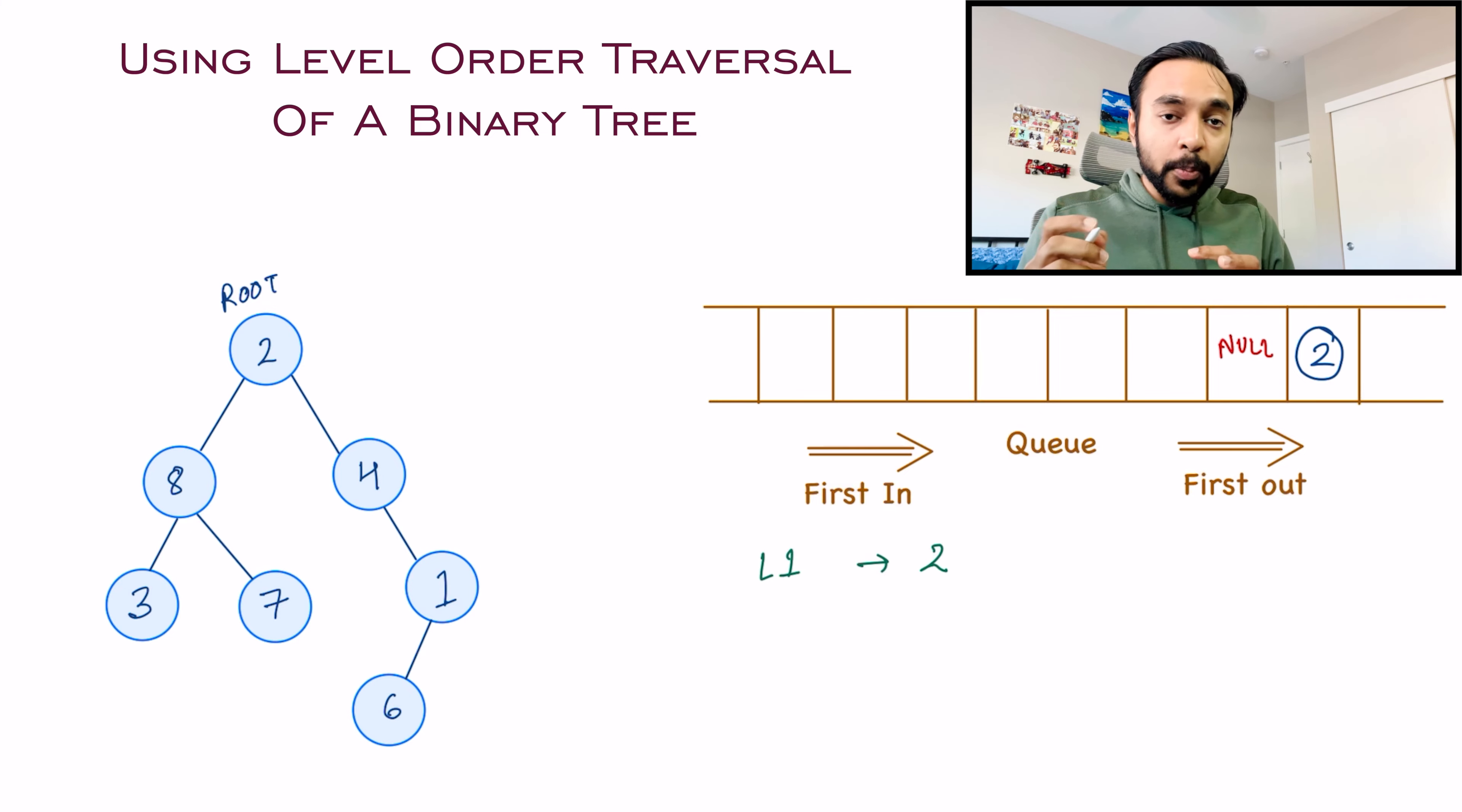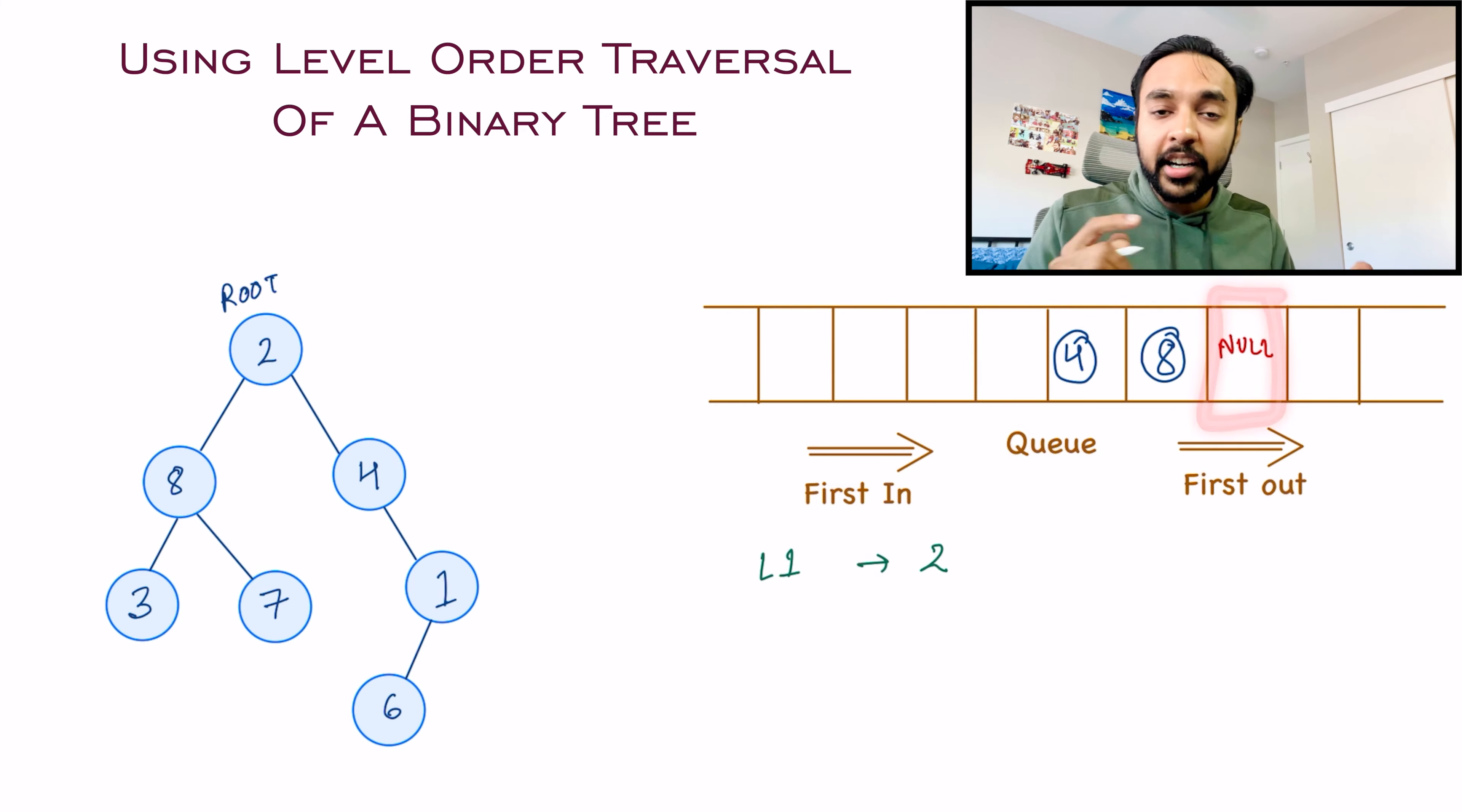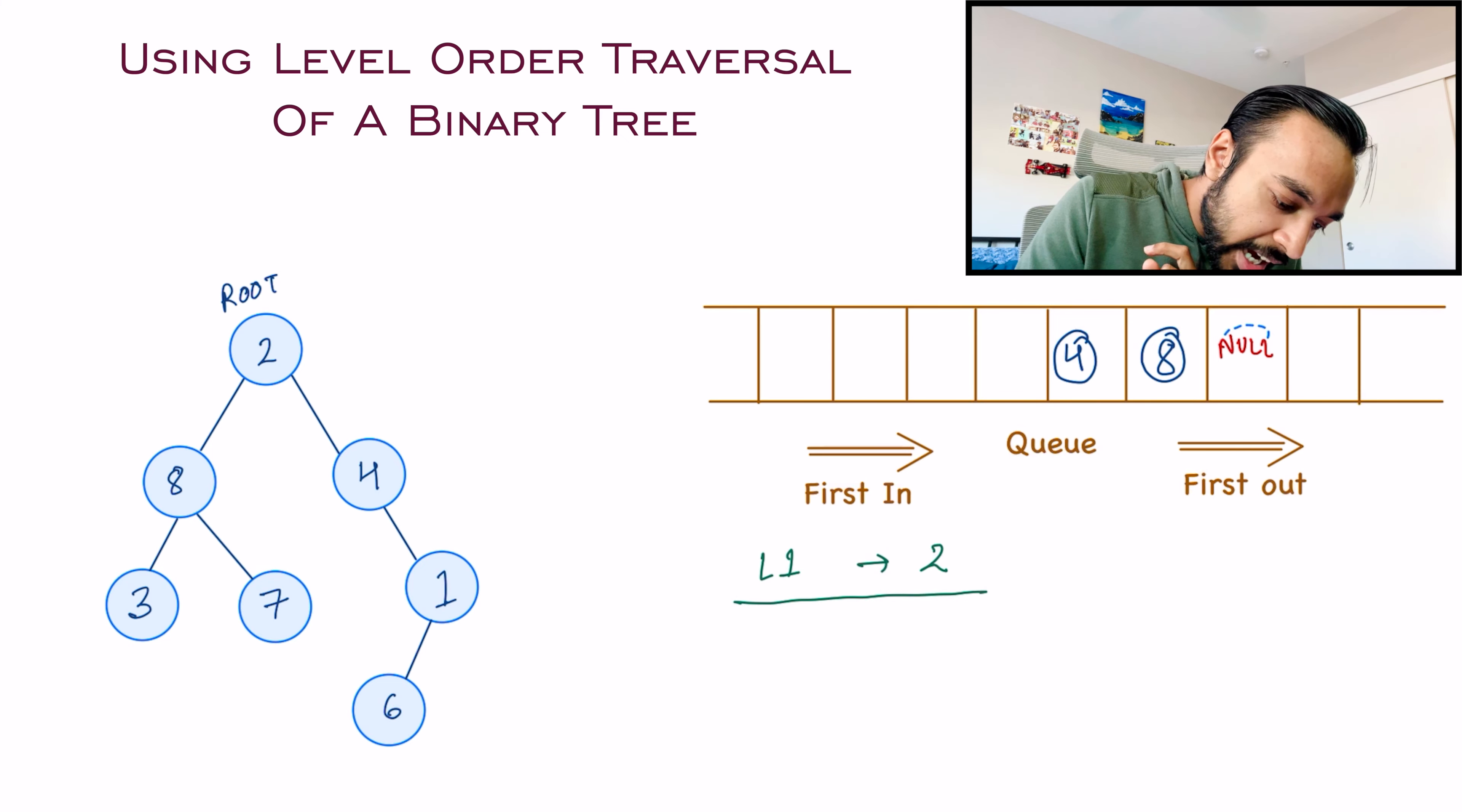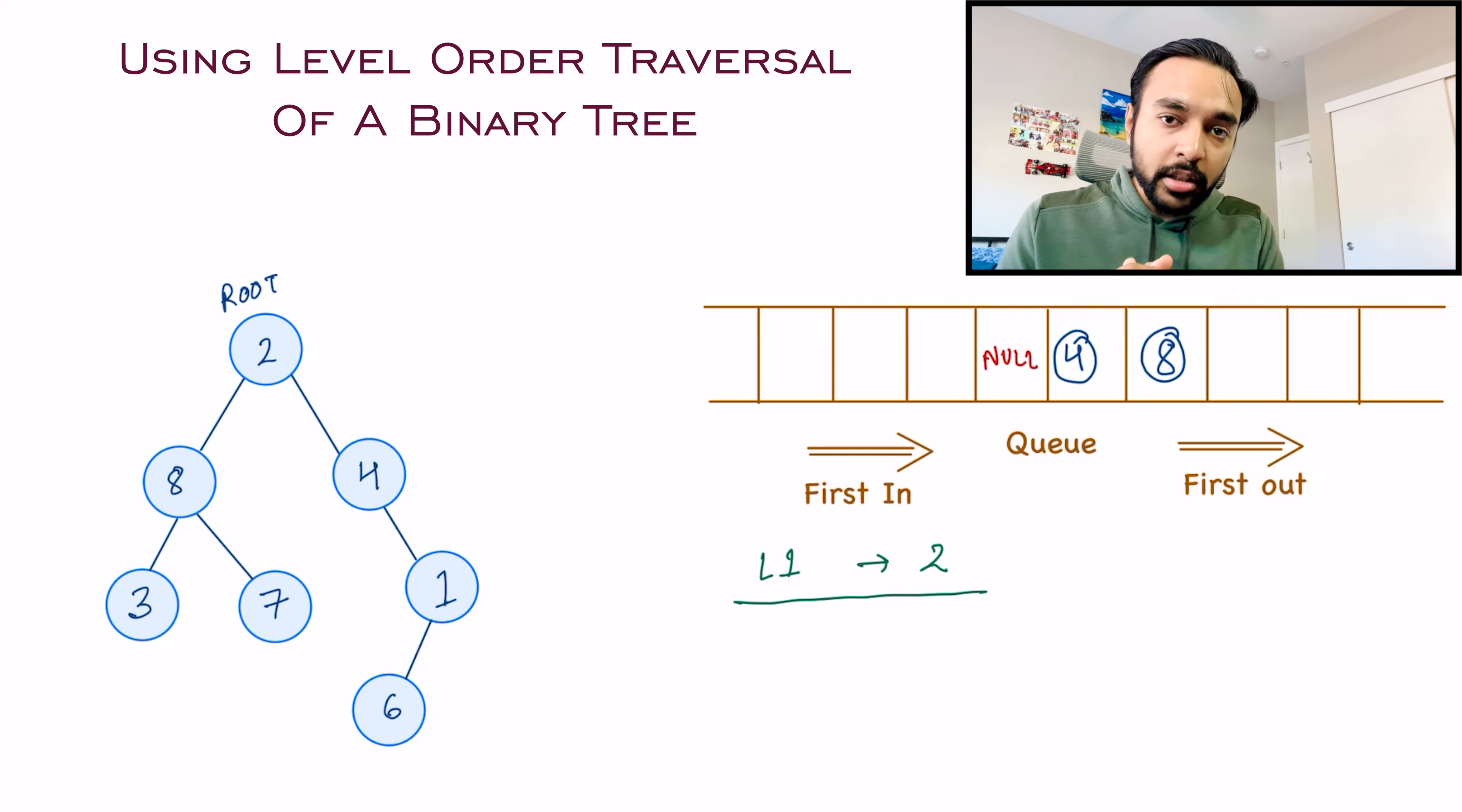So now start your level order traversal. What is the first element that you get? You get the element two. So I will start defining levels over here. Level one has the element two. Now what do you do? You will see how many children the node two has. Two has the child eight and four. So following the level order traversal, I will add eight in my queue, and then I will add four in my queue, and two will be removed from the queue. As soon as you look at the next element in the queue, you see a null over here. And this is the interesting part. As soon as you see a null, this means that you have completed one level.